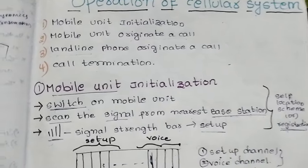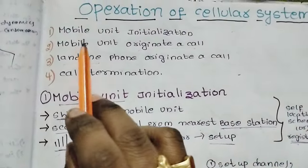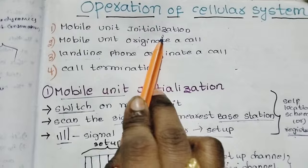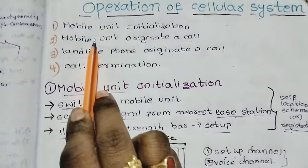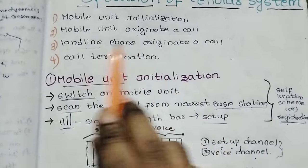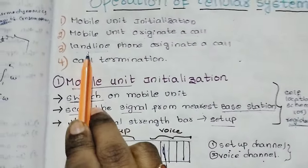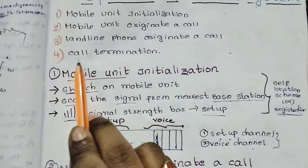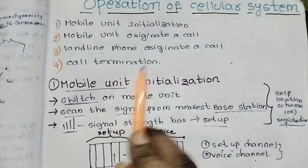There are 4 steps in this video. That is: mobile unit initialization, mobile unit originating a call, landline phone originating a call, and call termination.